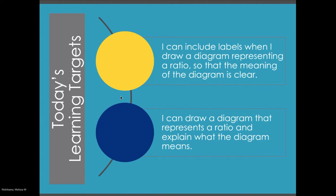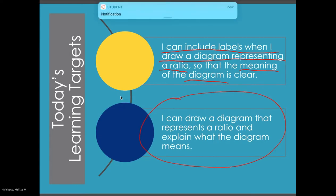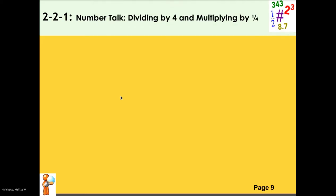Our learning target for today — what I mean by learning target is, what is the goal of this lesson? What do you need to know by the end of today? Give me one second, Chloe, I need you to bring your voice down, I'm in a meeting. Our goal for today is that you can include labels and draw a diagram when representing a ratio. We're going to be focusing on how to draw those diagrams and what they mean, because that meaning of the diagram is very important. I'm trying to present from my iPad and draw on it.